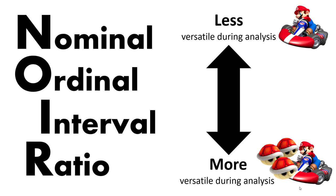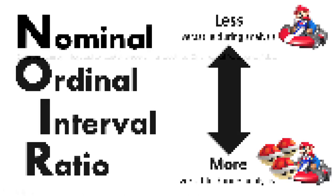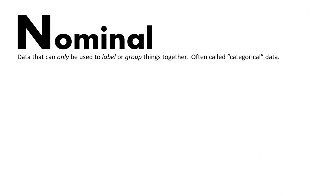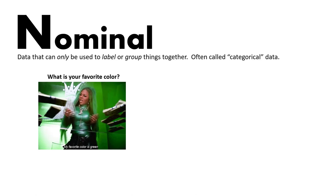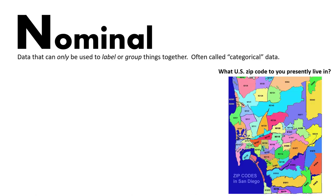Nominal level data is data that can only be used to apply labels or group different things together. It's commonly called categorical data. For example, if I ask 'What is your favorite color?' you can only respond with a categorical answer. If I ask 'What US zip code do you presently live in?' — even though the answer is numerical, it's a simple categorical grouping. You can't add two different zip codes together to solve for a different zip code.